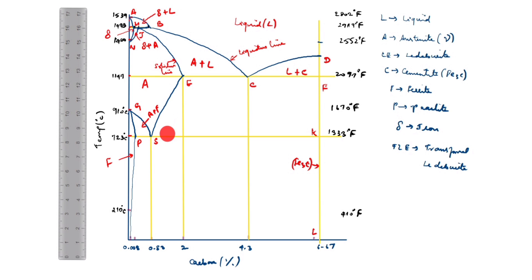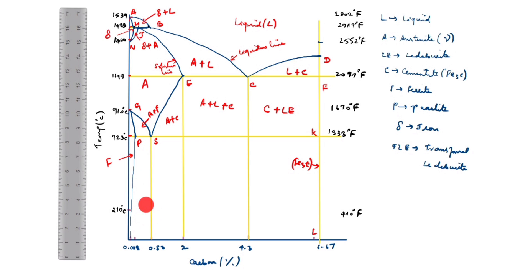This portion is austenite plus cementite (A + C); C is cementite or Fe3C. This is austenite plus liquid plus cementite (A + L + C). L is liquid, A is austenite, C is cementite. So this one is cementite plus ledeburite. This is pearlite plus ferrite (P + F) — this full section is pearlite plus ferrite.